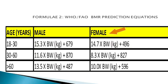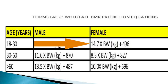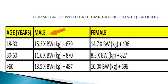For female clients aged between 18 and 30 years, their basal metabolic rate equals 14.7 multiplied by body weight in kilograms, the product of which is added to 496 kilocalories. For male clients aged between 30 and 60 years,